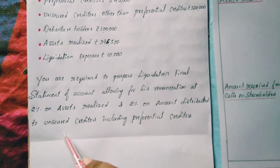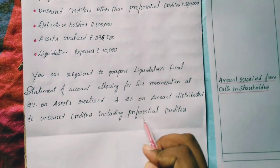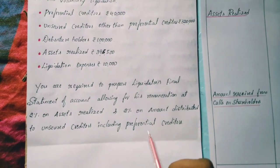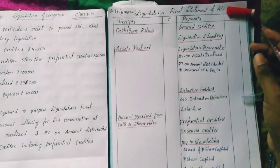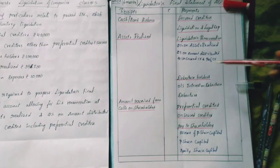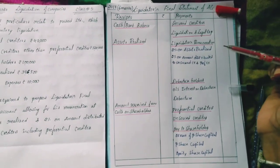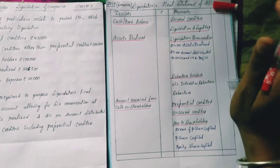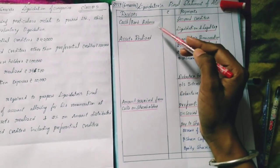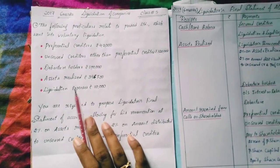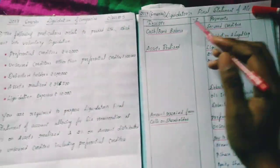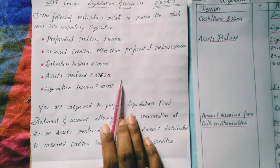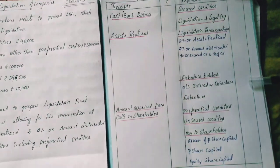So 2% remuneration is given: 2% on assets realized, and 2% on the amount paid to unsecured creditors including preferential creditors. Now let's record this as the first 2017 six-marks problem.